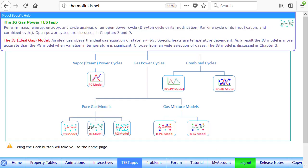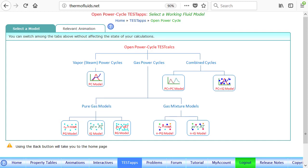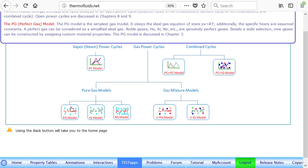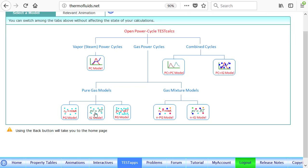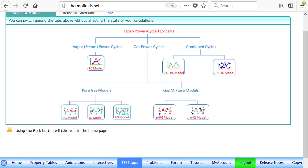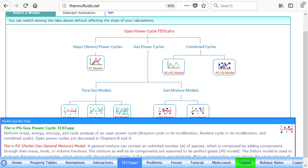You can start a Rankine cycle, the steam turbine using PC model, or one of those gas models can help you solve a gas turbine problem. Obviously, the pure gas will be most of the time our working fluid, such as PG model, IG model, or could be a mixture model. For instance, suppose you want to model the gas going through gas turbine as a mixture of nitrogen, oxygen, and carbon dioxide to have better properties.